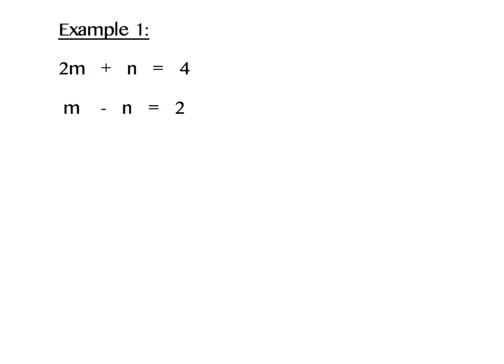Step 2 says get one column of variables to be opposites. Now, if I notice that my n's are positive 1n and negative 1n, I already have step 2 set up for me. The n's are already opposites.